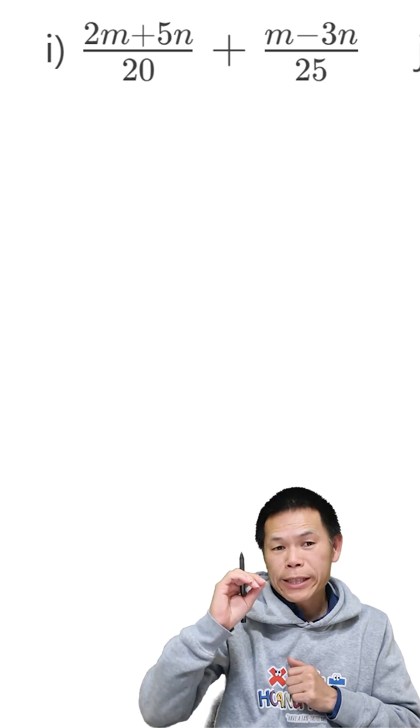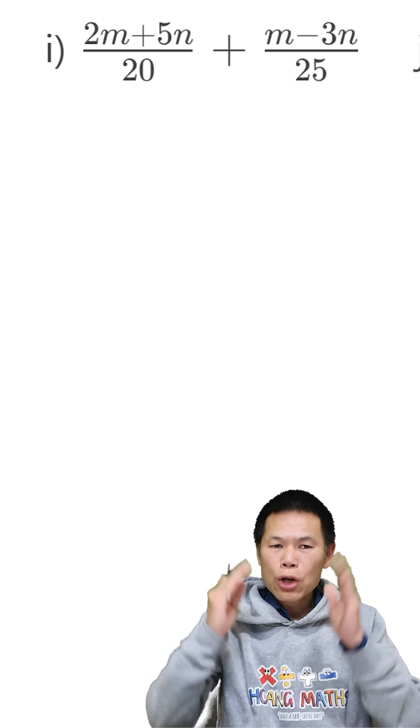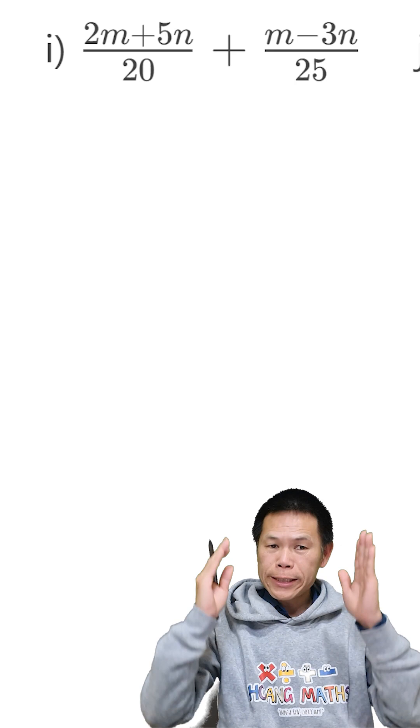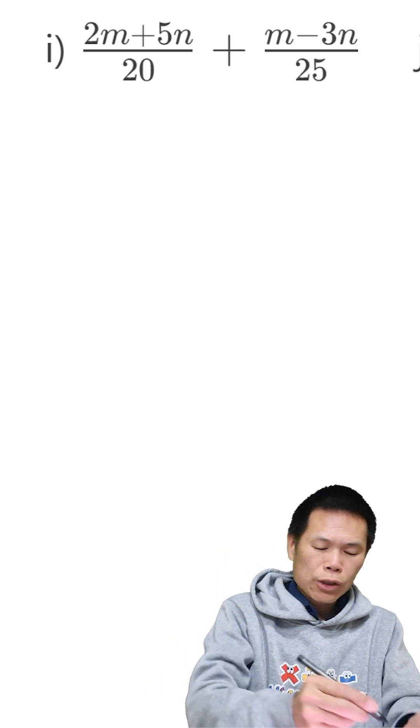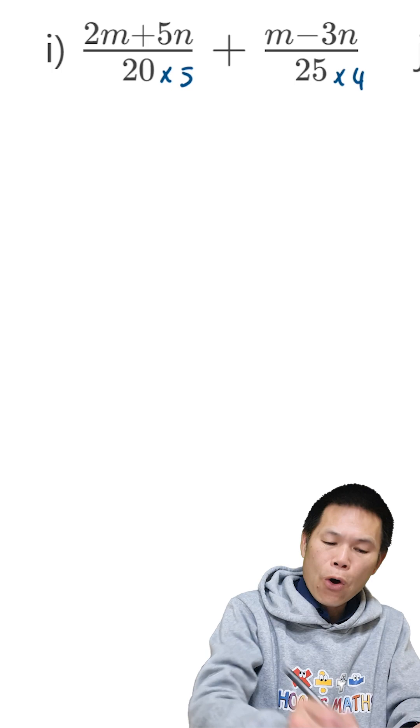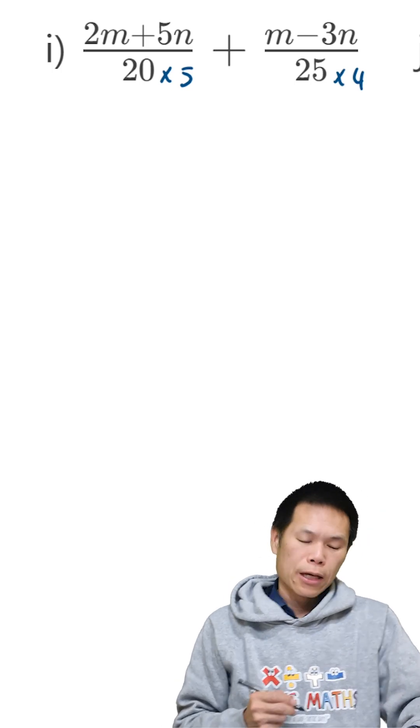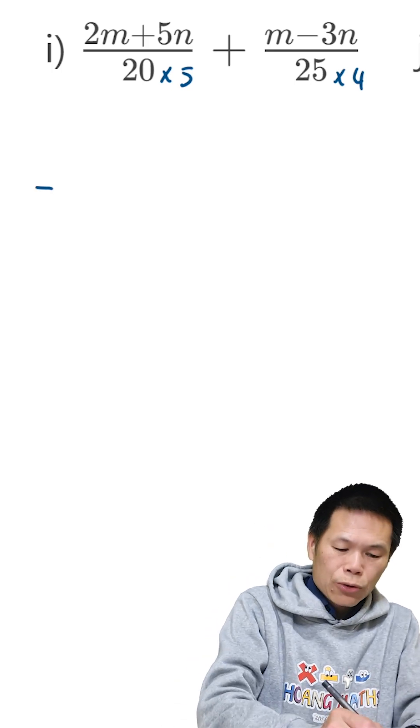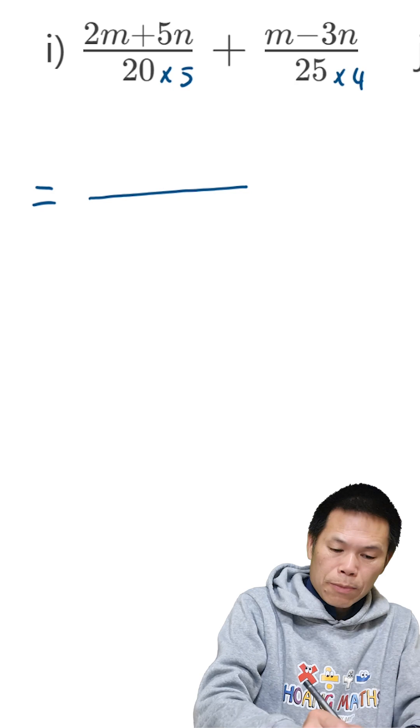So for part i, the denominators are 20 and 25. The lowest common denominator is 100 because if I multiply this by 5, I get 100, and if I multiply this by 4, I get 100.